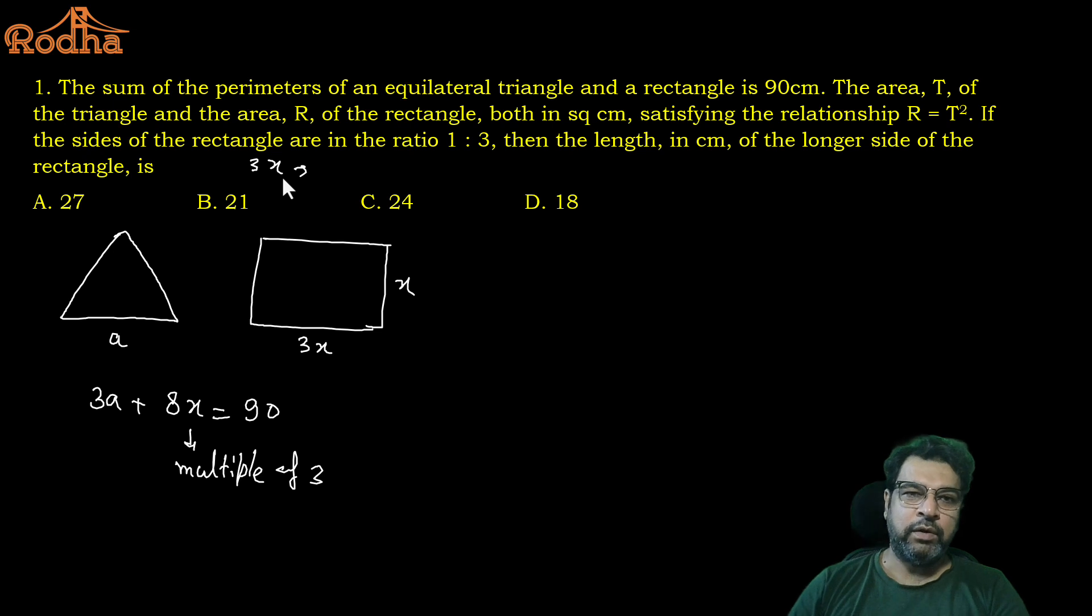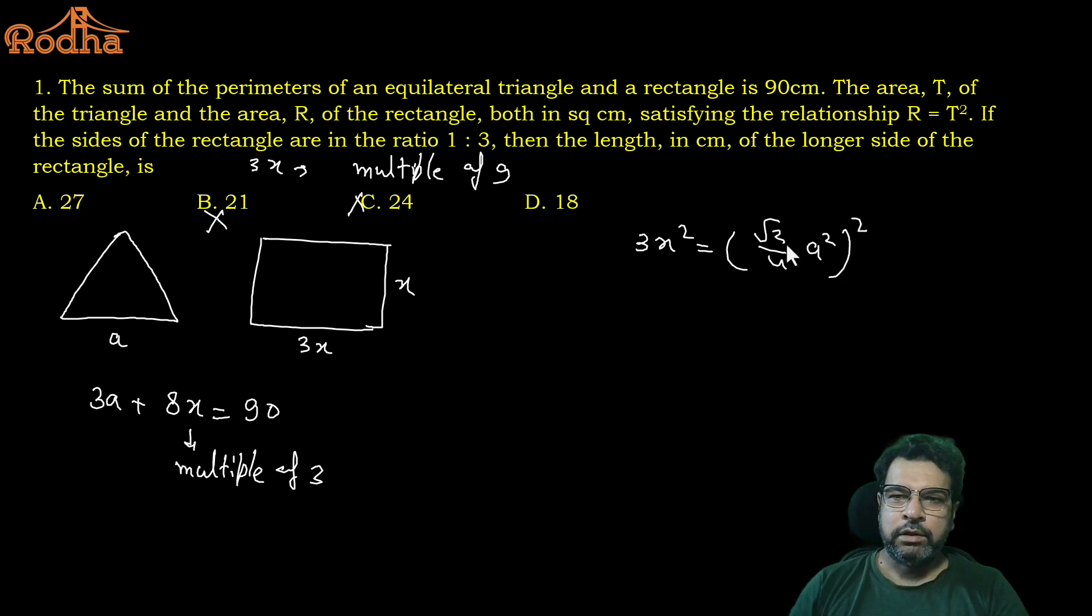Now, first thing that the sum of perimeters is 90, so from that 3A plus 8X should be equal to 90. Now, look at this, what are the tricks we can apply for this? First and foremost thing, if you start with this, this is a multiple of 3, this is a multiple of 3, X should be multiple of 3. Remember, this is the value of the longer side, these are the values of 3X.